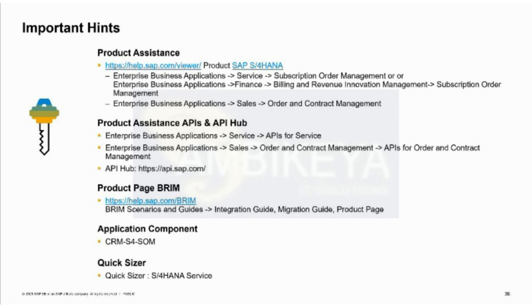Q: 'Is it possible to use quantity on subscriptions? A customer has a requirement that buying 5 subscriptions gives 10% discount and buying 10 subscriptions gives 20% discount.' A: You can set up such things in your pricing procedure — you can work with stage prices or define a discounting rule to determine the discount. With no further questions, thank you for your participation.